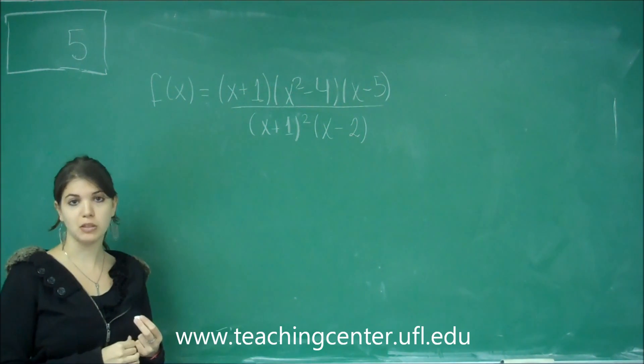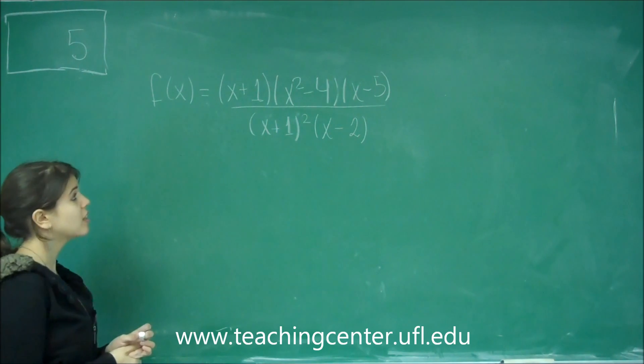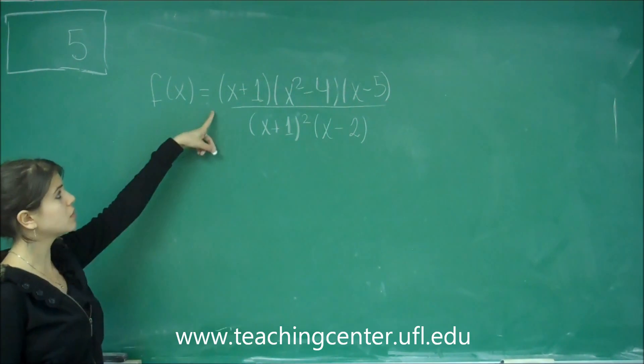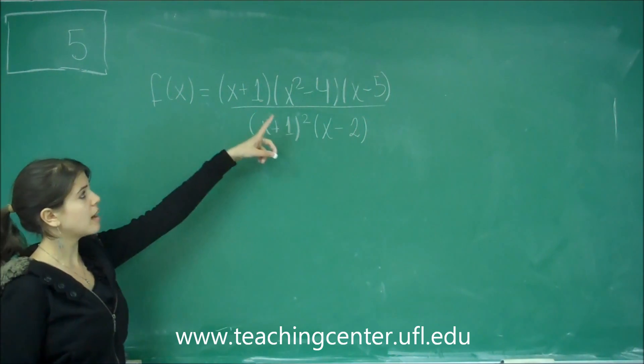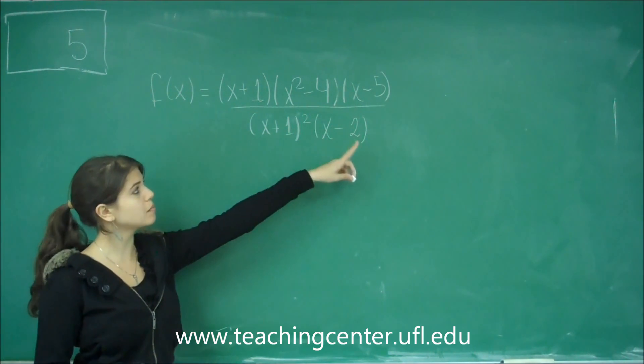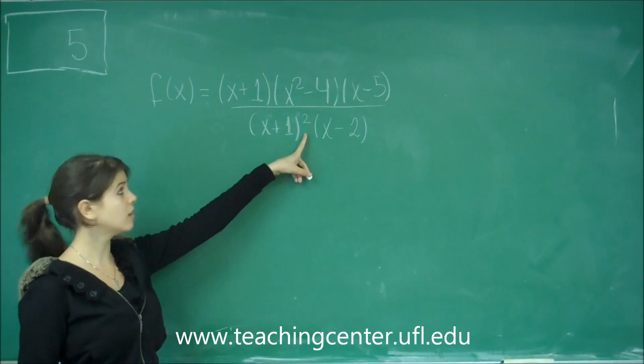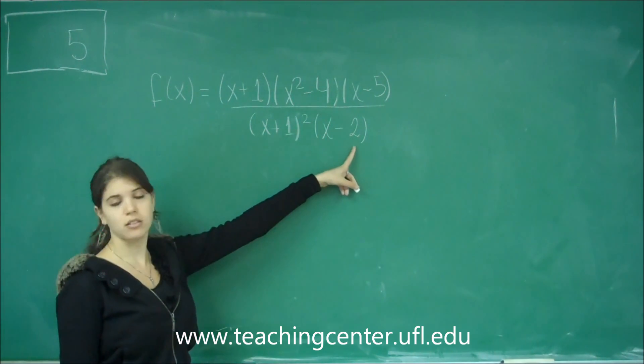Question number 5 on the multiple choice says, find all the zeros for the rational function f of x equals x plus 1 times x squared minus 4 times x minus 5 over x plus 1 quantity squared times x minus 2.